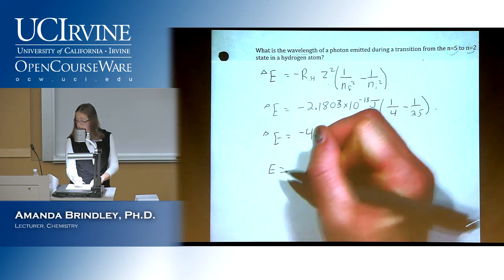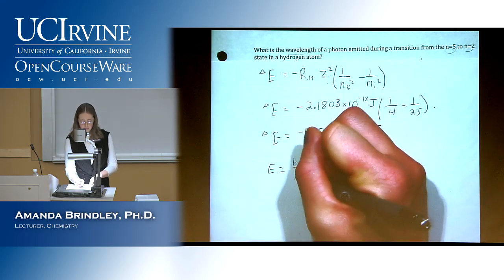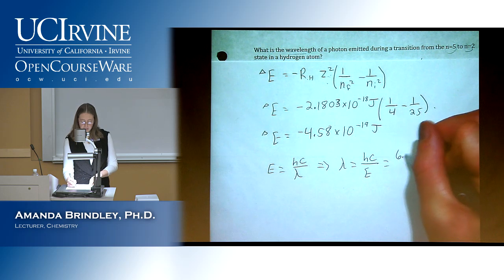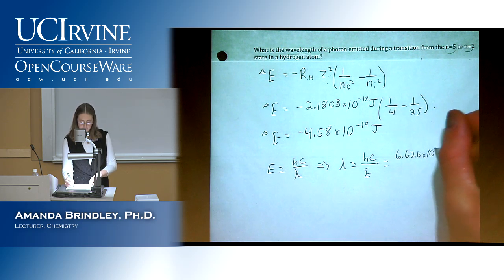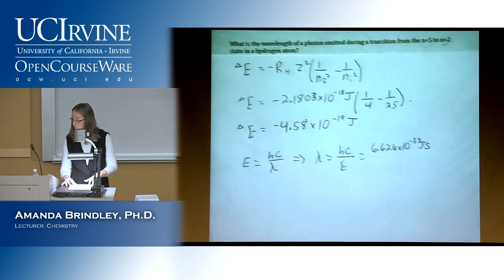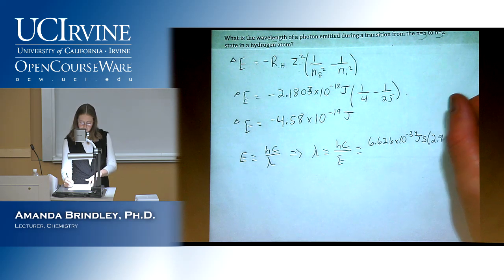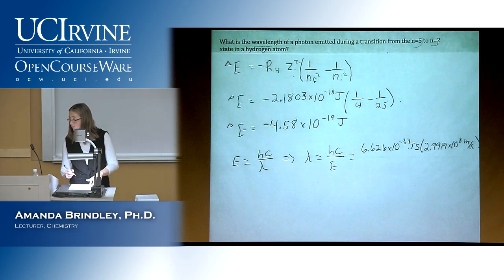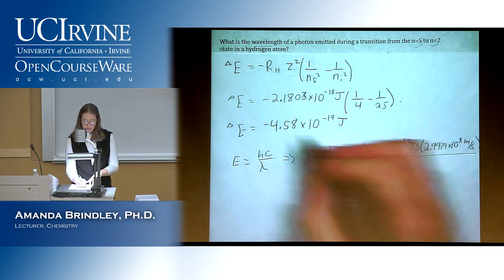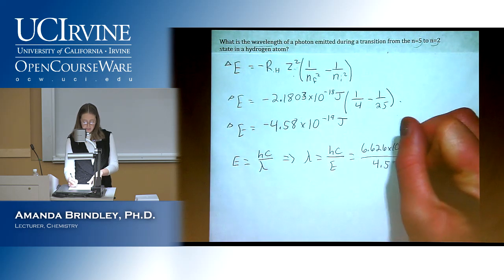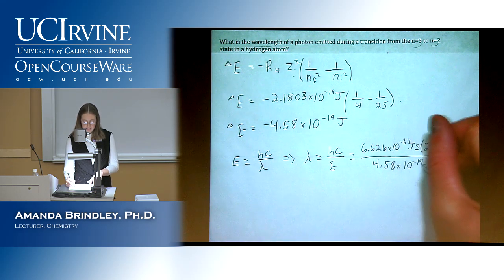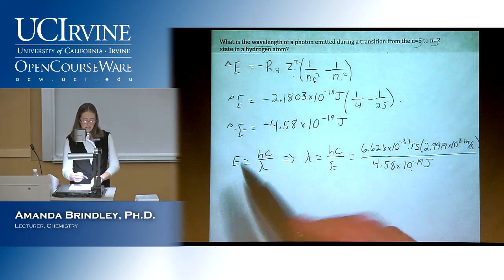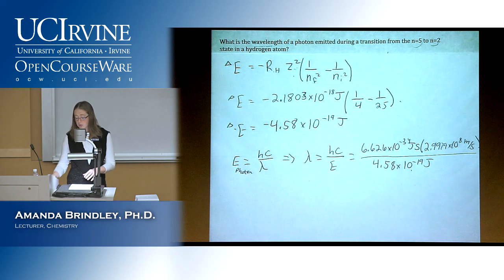Now we need to solve for wavelength using E equals hc over lambda, rearranged for lambda. When filling in E, we don't want the negative value because wavelength can't be negative — it's a distance. So what we fill in for energy needs to be positive; this is the energy of a photon, not delta E. It's useful to write 'energy of photon' there to keep them distinct.